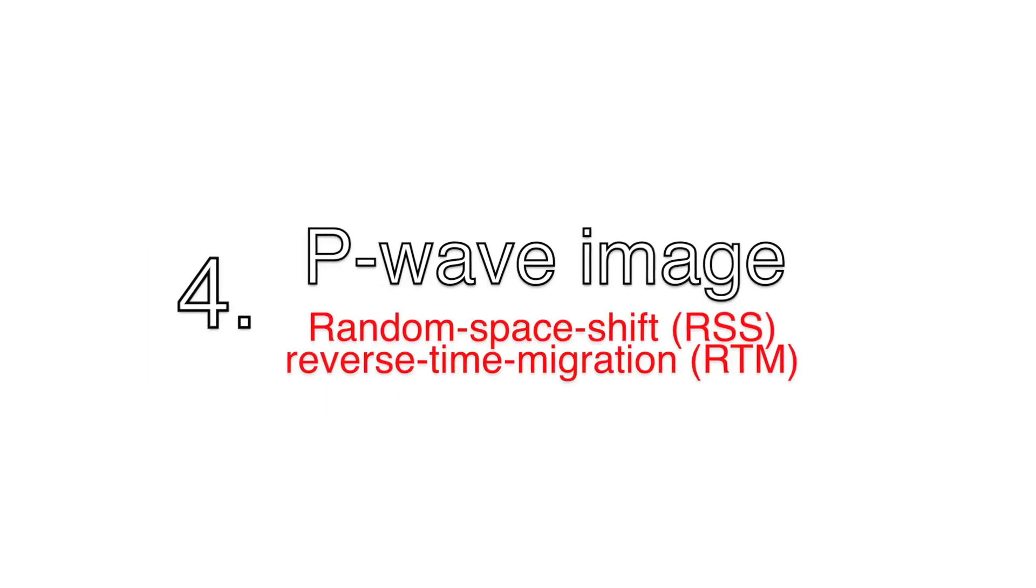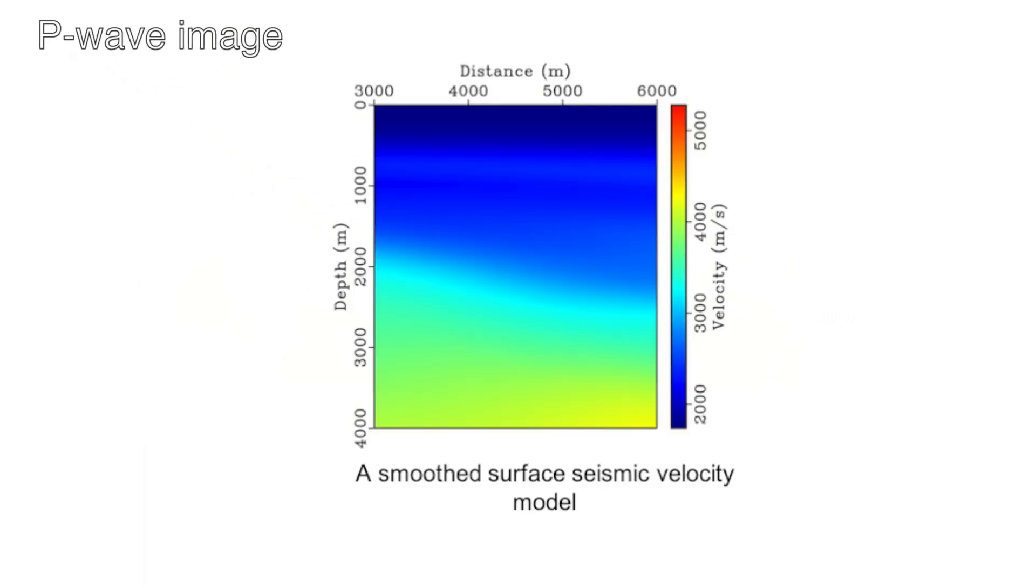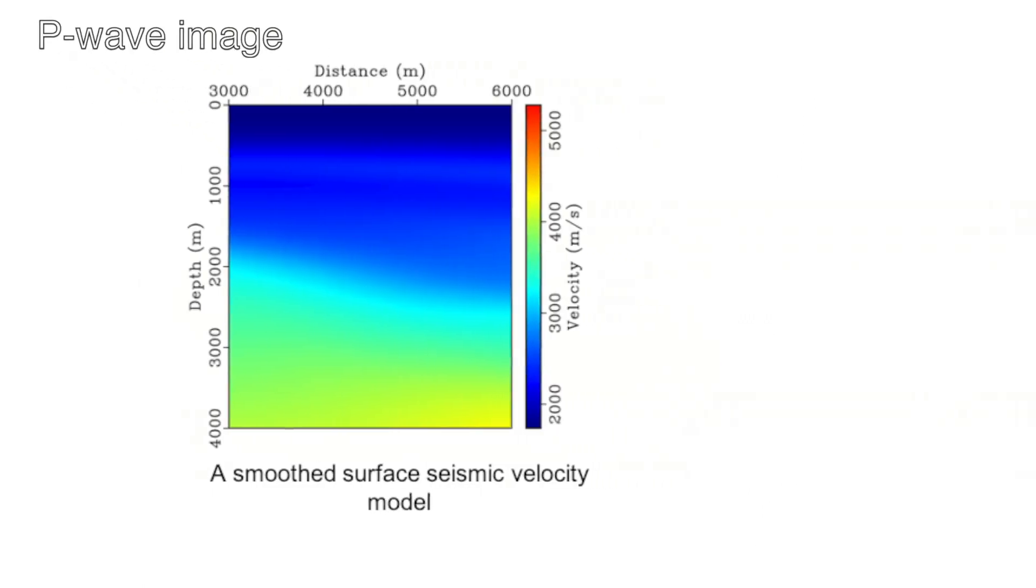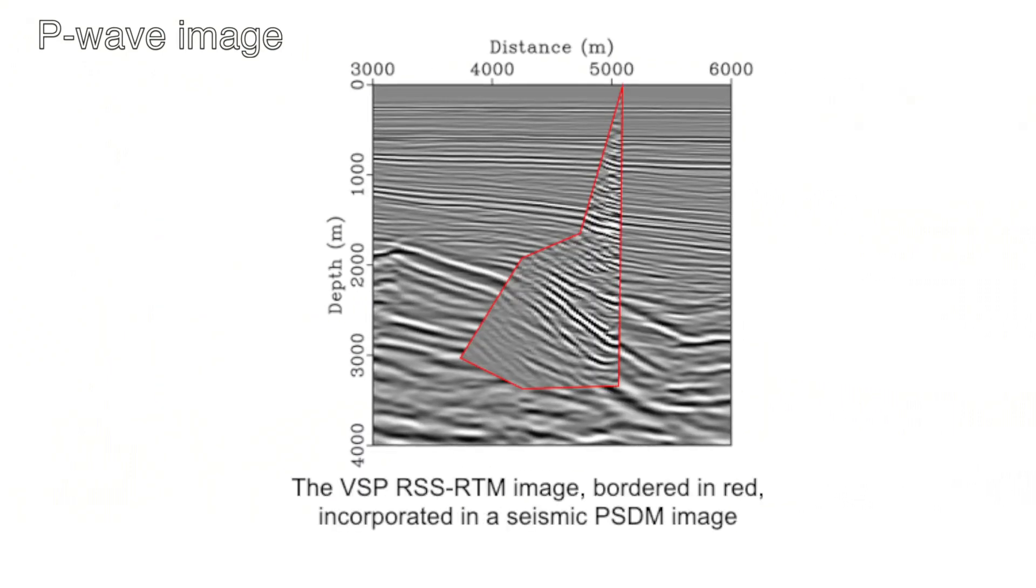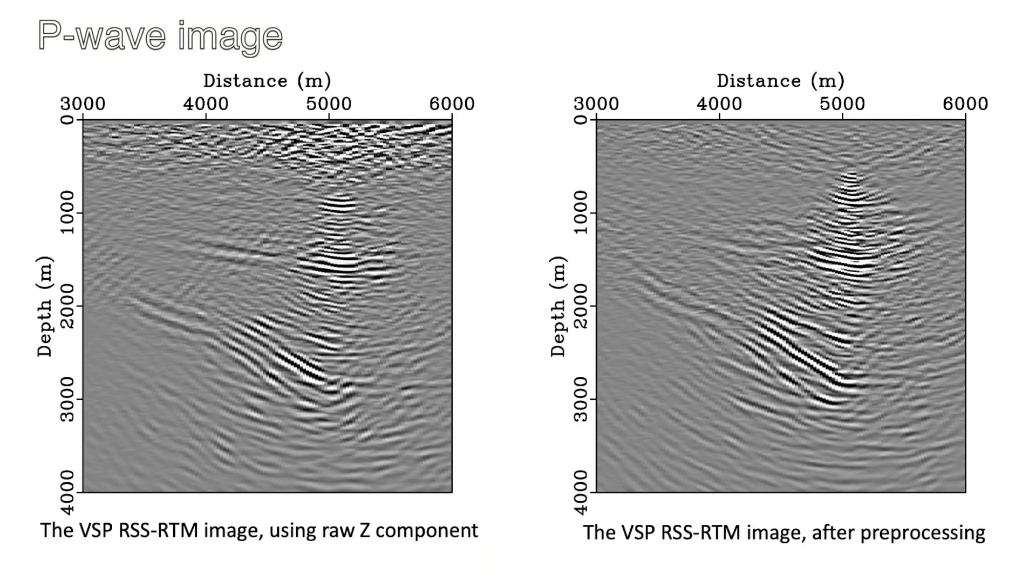We next implemented RSSRTM to the field data. We used a smooth velocity model used in the surface seismic for fair comparison. The VSP image was bordered in red and incorporated in the surface seismic image. It is obvious that the VSP image provides a higher resolution and a pronounced amount of details in its illumination range.